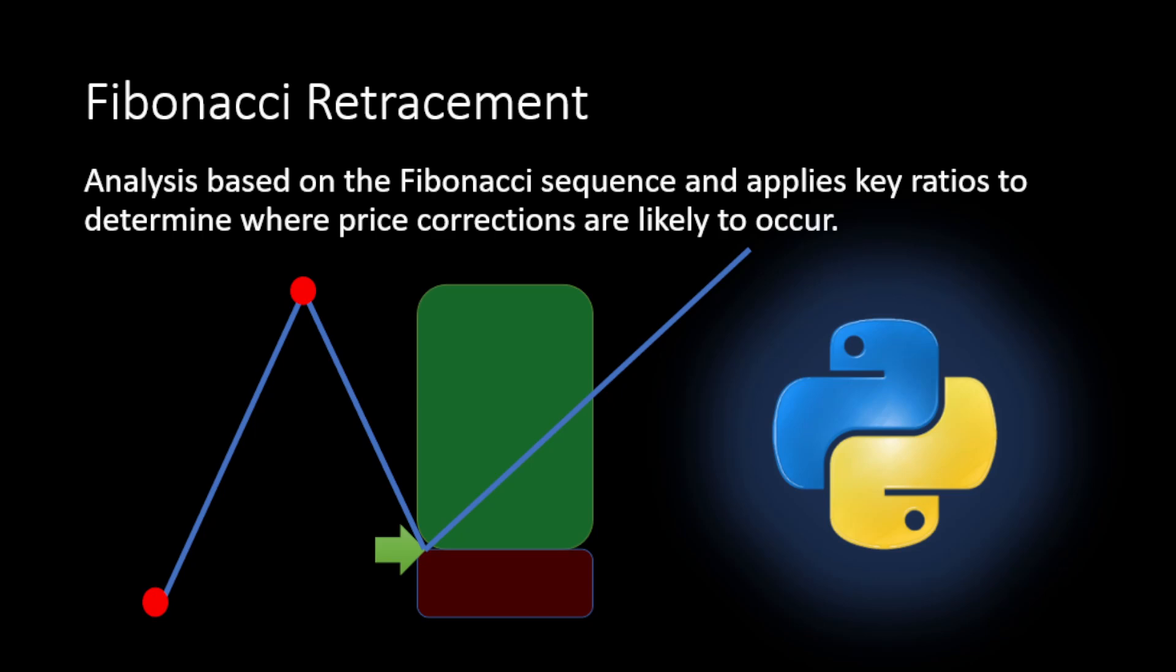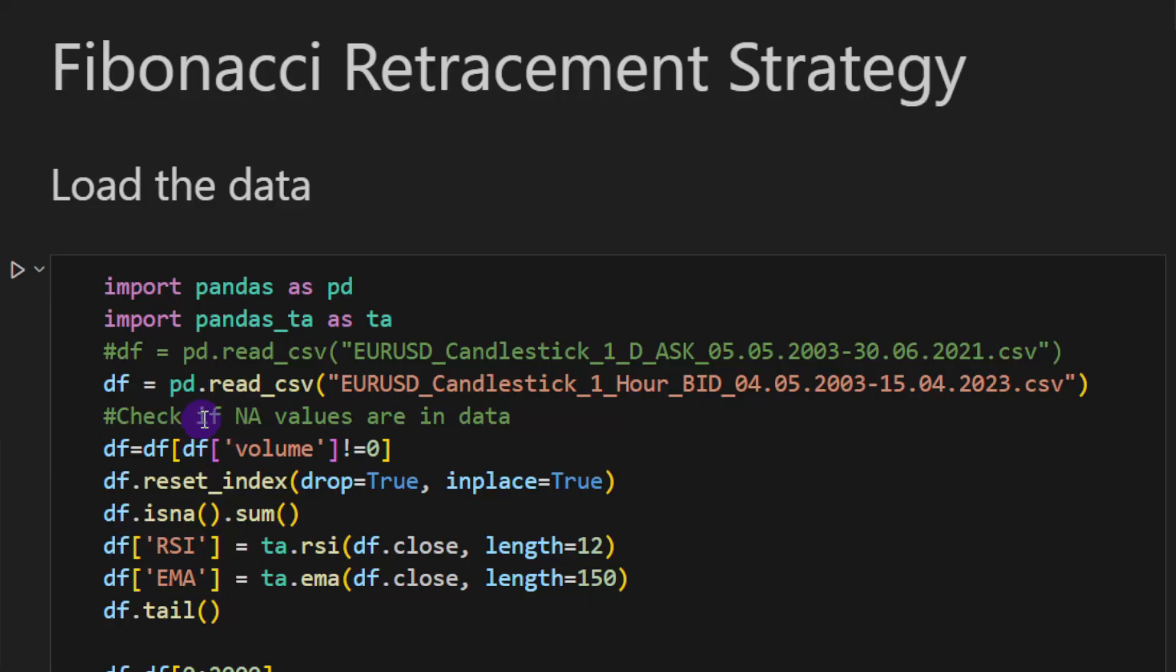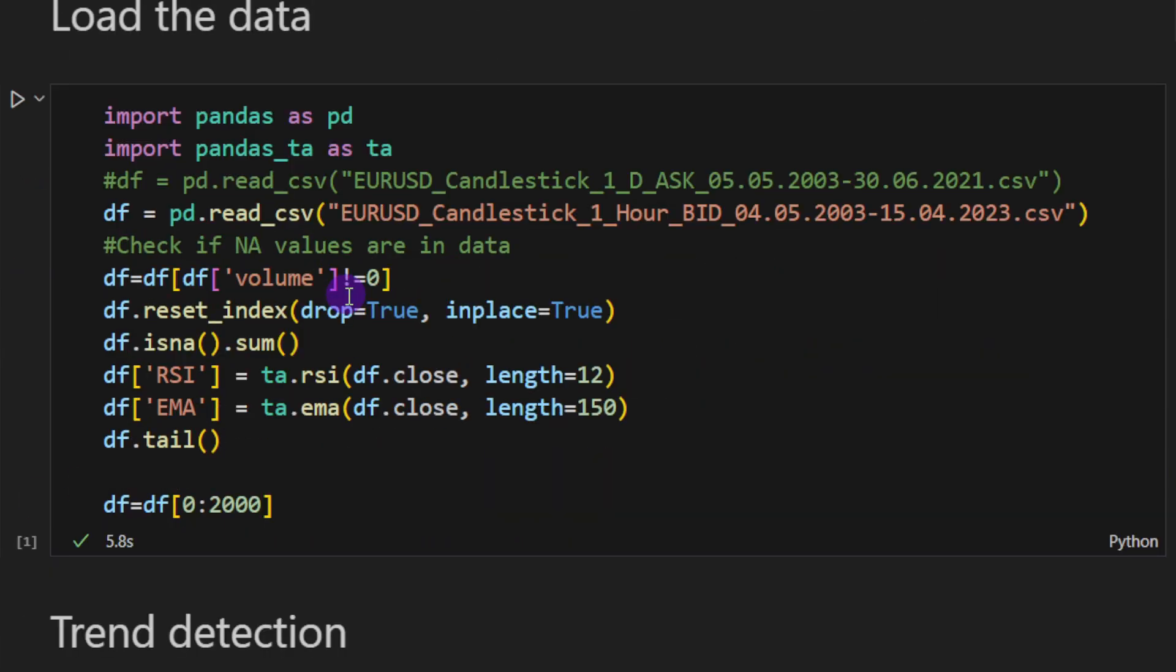It's not that the price always retraces to these levels or magic numbers. We don't know where exactly the price will bounce back, but the Fibonacci rules play an important role in framing our reward-risk before we take any action. Now let's put this approach under test and see how it goes in Python.